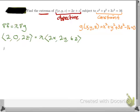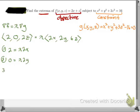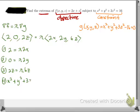Then I'm going to list out all of my equations, just so I have everything organized. The first equation is 2 = λ·2x, the second equation is 0 = λ·2y, the third equation is 2z = λ·6z, and the fourth equation — our last one — is always going to be the constraint: x² + y² + 3z² − 16 = 0.